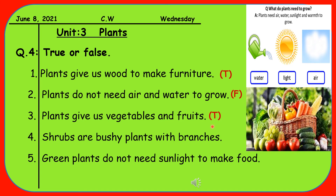Sentence four is: Shrubs are bushy plants with branches. I gave you the example of the rose plant — whenever you go to a park or garden, look carefully at the rose plant. If you try to touch it, you can feel the thorns, and it has bushes, branches, and leaves. So shrubs are bushy plants with branches — that is True. Write T.